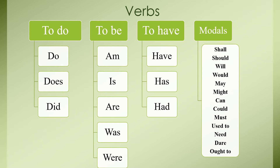The modal auxiliary verbs are: shall, should, will, would, may, might, can, could, must, used to, need, dare, ought to. Each modal auxiliary has a different function. So when you use them in communication, you should know what is the function of shall, what is the function of should, where do you use can, where do you use may, where do you use might. I will be making another video on modal auxiliaries.